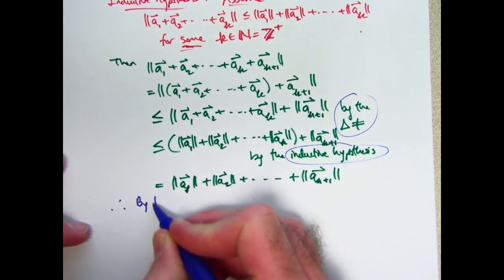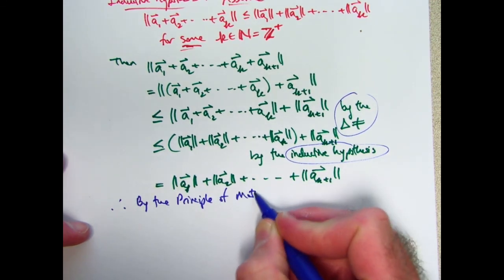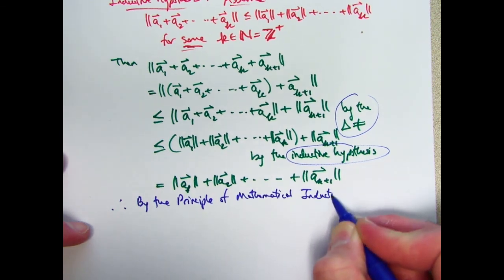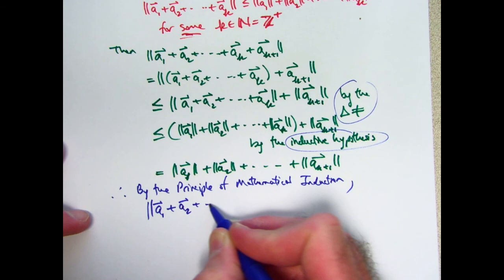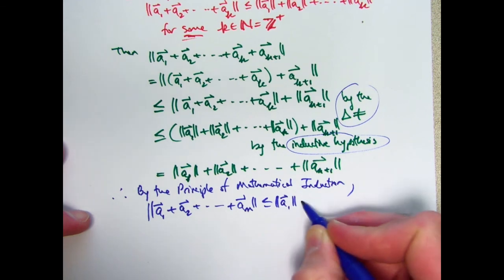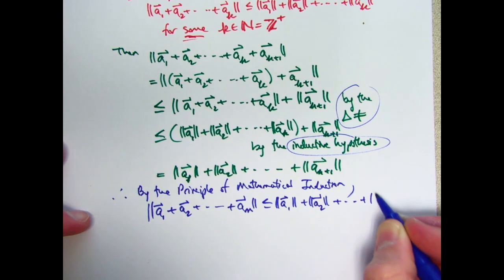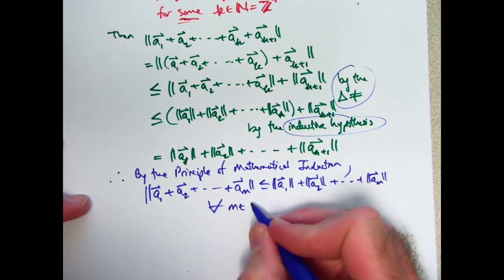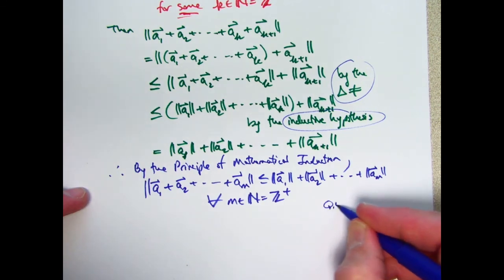Therefore, by the principle of mathematical induction, let me go back to using m now. The inequality where I use an m for my number of terms is true for all positive integers m. Emphasis on the for all. Upside down a means for all. For all natural numbers m which are also positive integers. Again, you don't have to write both things. And we are done. That finishes the proof. This last sentence could be considered to be optional.